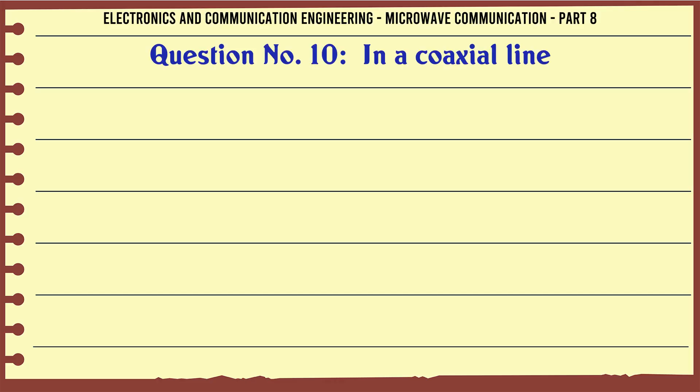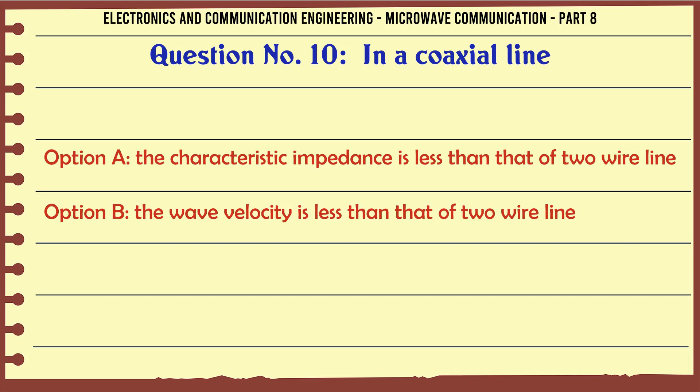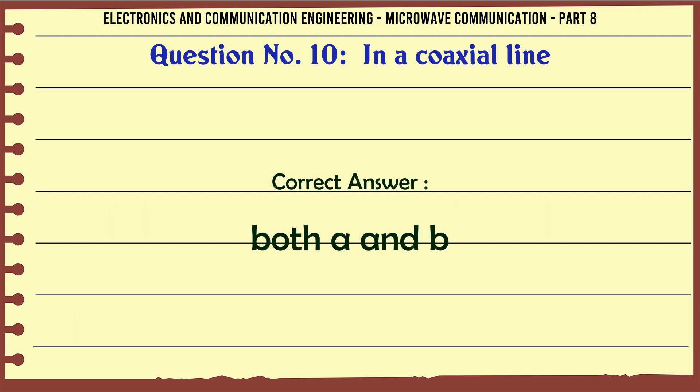In a coaxial line — A. The characteristic impedance is less than that of a 2-wire line, B. The wave velocity is less than that of a 2-wire line, C. Both A and B, D. Neither A nor B. The correct answer is both A and B.